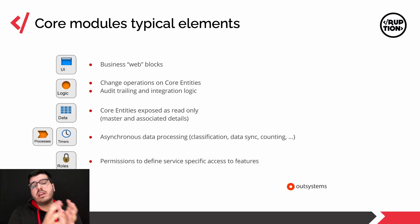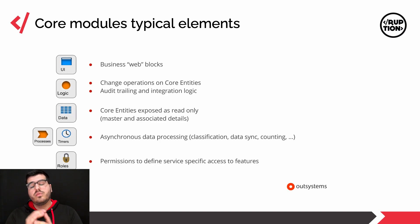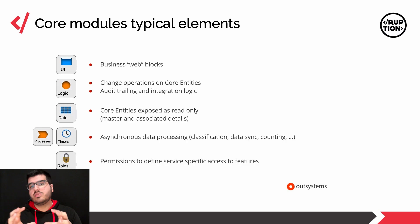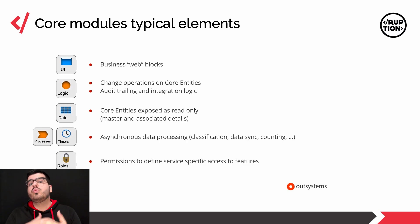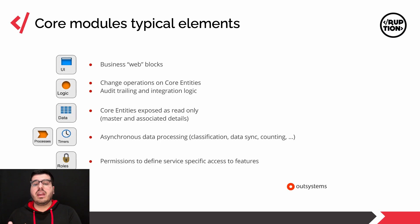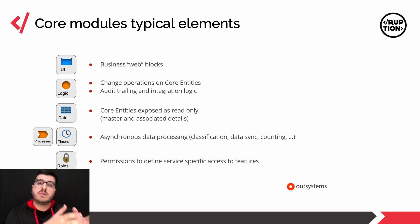We can have processes and timers for asynchronous data processing — for example, classifications, data syncs, and counting. At the end, we'll have roles, which are permissions to define service-specific accesses to features. Usually you want your roles on your theme, which will allow you to control who is going to access your application, but sometimes you need extra roles that are more service-specifically driven, and this is where you apply them.